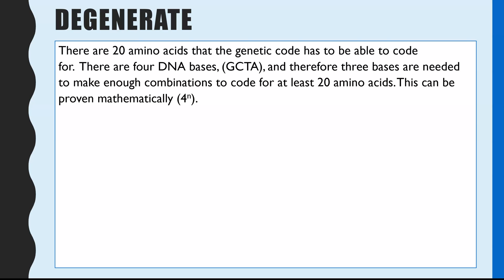Looking at the first feature — degenerate — the first thing you need to be aware of is the fact there are 20 different amino acids and the genetic code is able to code for all of those 20 amino acids. There are four DNA bases: guanine, cytosine, thymine, and adenine. Therefore it has to be that the genetic code is three bases out of those four, coding for different combinations to create at least 20 codes. You can prove this mathematically using the formula four to the power of n, where four represents the four possible bases and n is the number of bases that make up your code.